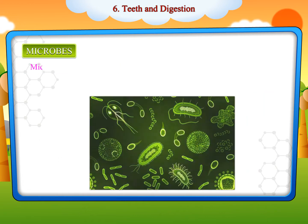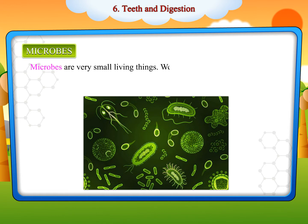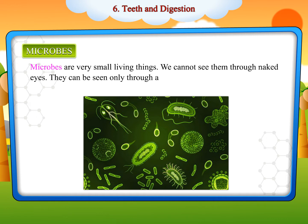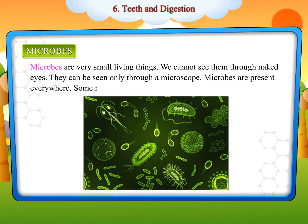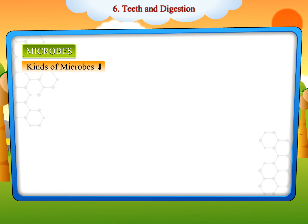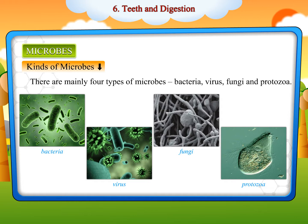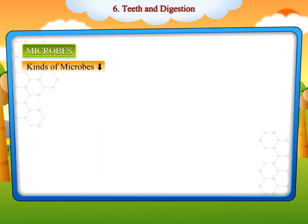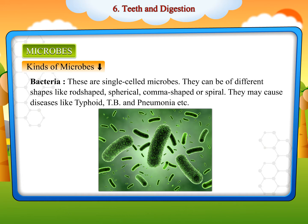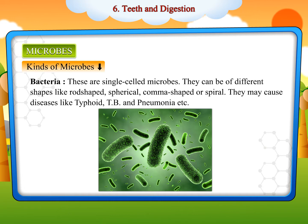Microbes are very small living things. We cannot see them with the naked eye — they can be seen only through a microscope. Microbes are present everywhere. Some microbes are useful while some are harmful. There are mainly four types of microbes: bacteria, virus, fungi, and protozoa. Bacteria are single-celled microbes that can be of different shapes — rod-shaped, spherical, comma-shaped, or spiral.